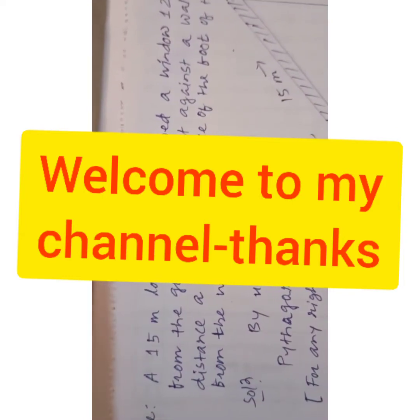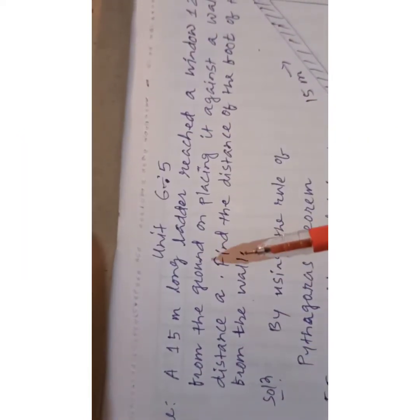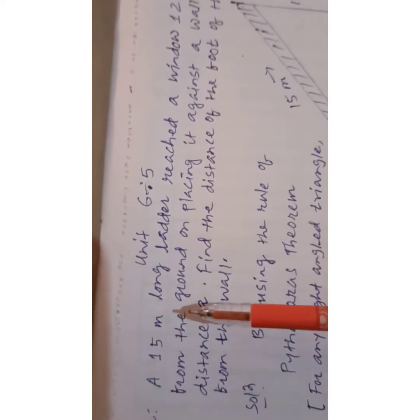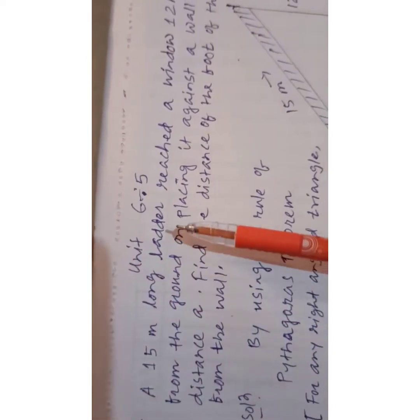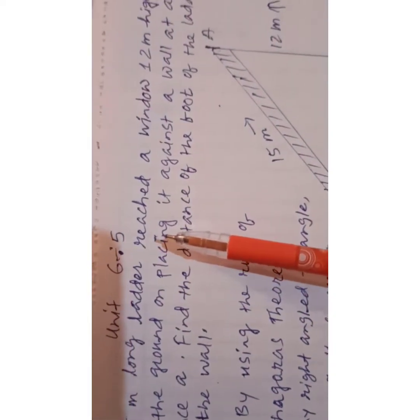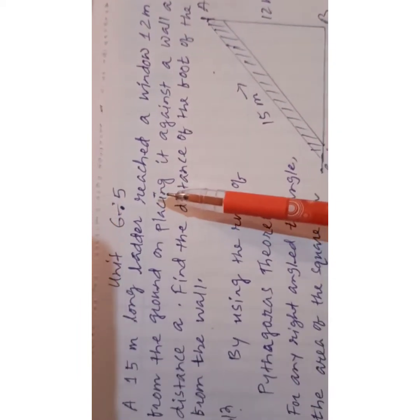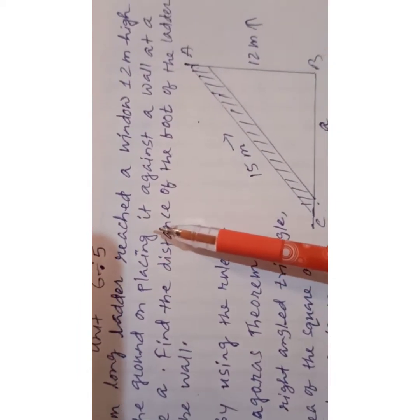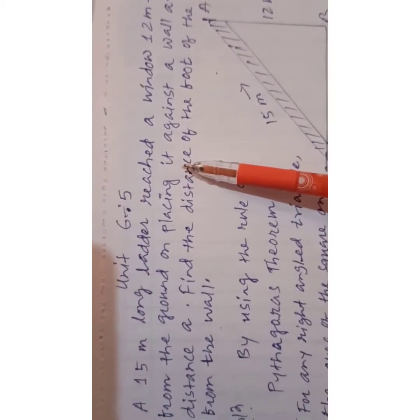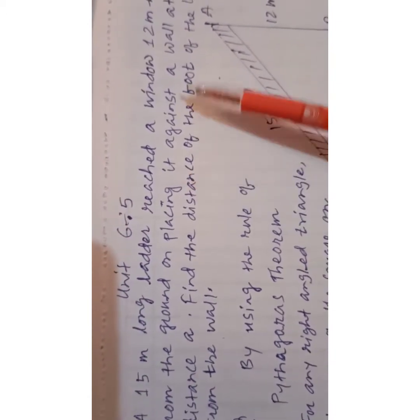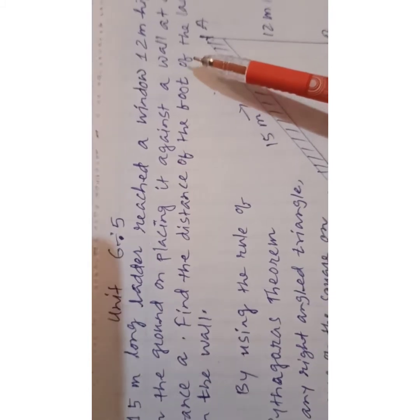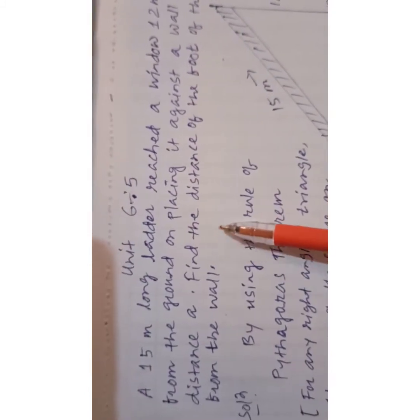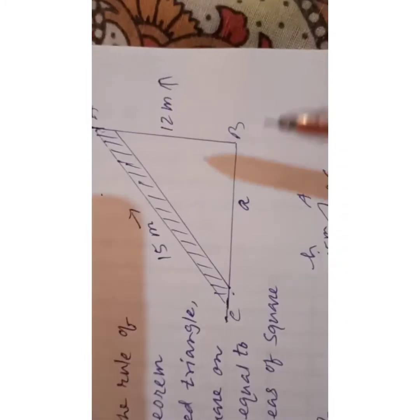Today I am going to solve this question from unit 6.5. The problem is: a 15 meter long ladder reaches a window 12 meters high from the ground, leaning against a wall at a distance. Find the distance of the foot of the ladder from the wall.